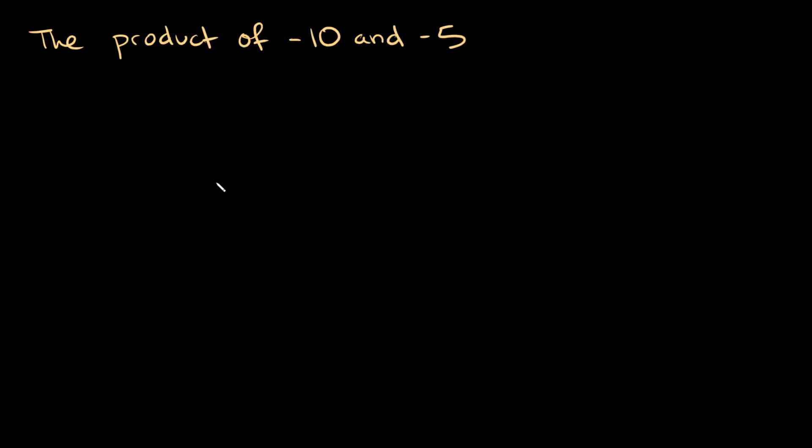Let's try another one. Okay, so here I have the product of negative 10 and negative 5. So again, product means multiply, so here I actually have negative 10 times negative 5. So how can we simplify this? Well, 10 times 5, that's 50, right? And then a negative times a negative is a positive, so your answer would be positive 50.